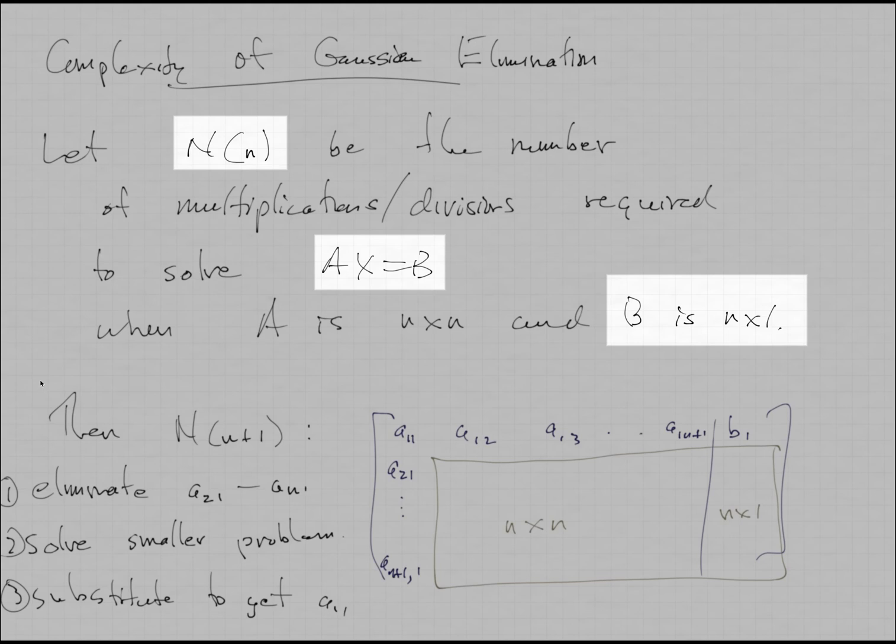And this is kind of an interesting example of operation counting. We're going to count the number of multiplications and divisions that we do. In the book, they do a more thorough job. They also count the number of additions and subtractions, but I think this is good enough for our purposes. I'm going to use a kind of recursive strategy in order to calculate this function, big N of little n. So what I'm going to do is I'm going to think about how does big N of n plus 1 compare to big N of n. How much bigger is it?